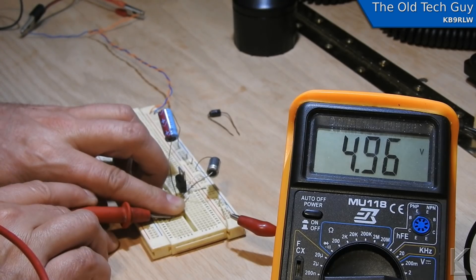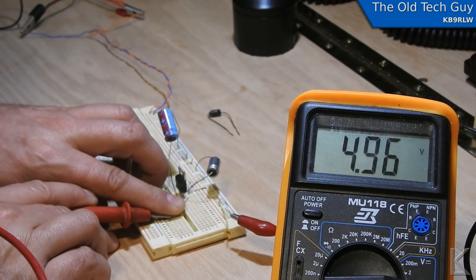The output at the regulator is 4.98. And by the time we get down the wire to the device we're just above four volts. Not enough to charge.